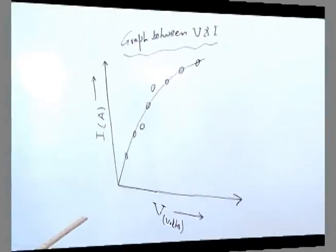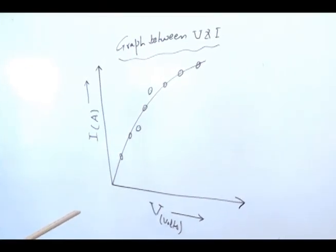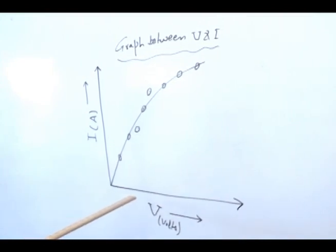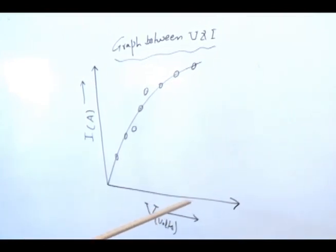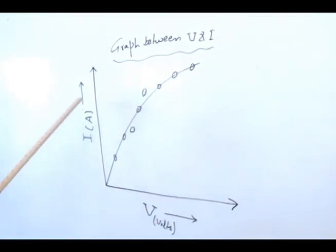Now with the help of the set of readings taken earlier, we will plot a graph between current and tension difference applied across the tungsten filament. Here we will take V along X axis and I along Y axis.